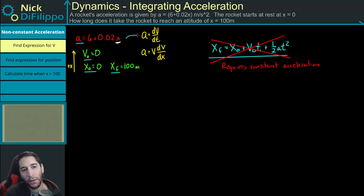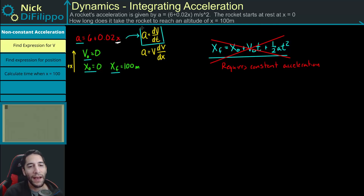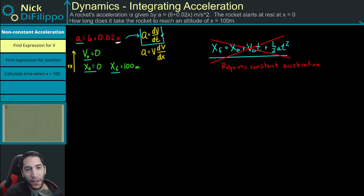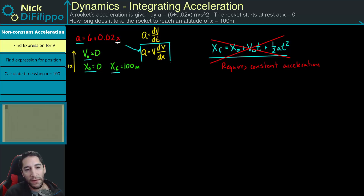You might want to try the first equation, but the problem is that when you substitute this acceleration into the dv/dt expression, you end up with three different terms: an x term, a v term, and a t term — so you won't be able to integrate. That means the equation we need to use is the second one: a = v dv/dx. Because our acceleration is a function of x, we'll only have two terms when we substitute.